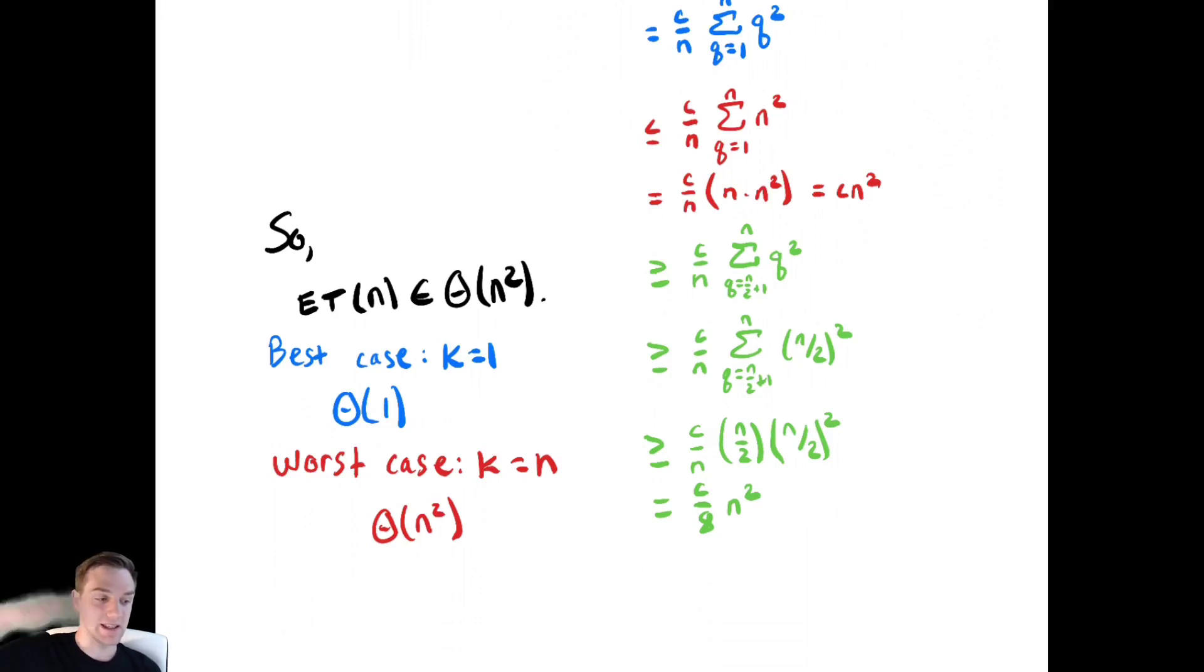By understanding these three different run times, you can get a good understanding of how might you expect your algorithm to run. Some of the time it might run very quickly in this case because of the best case run time being constant, and some of the time it might take a long time because of the worst case run time being quadratic.